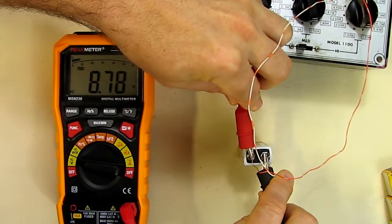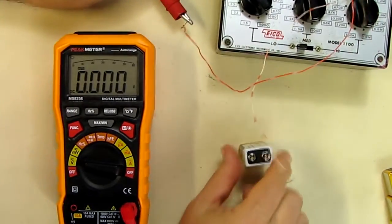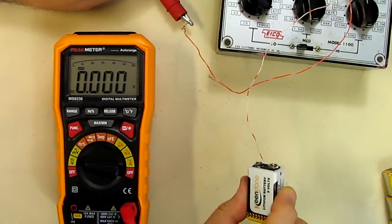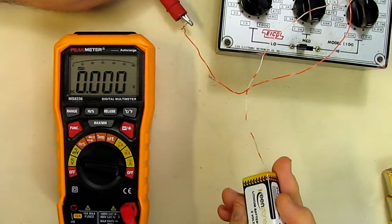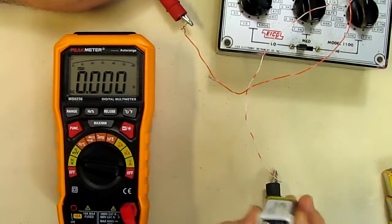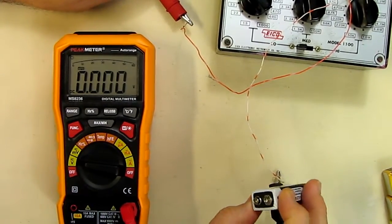Now we're going to try the Keenstone: 8.78. So the Keenstone is a lower voltage under load, which is not what I expect.